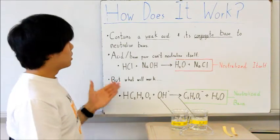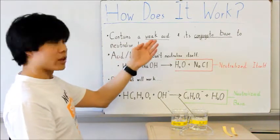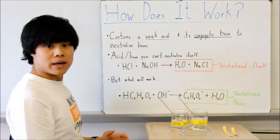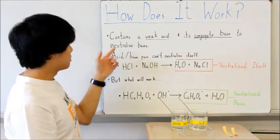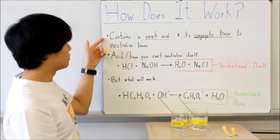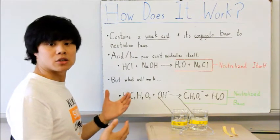So how does a buffer work? A buffer works by containing both a weak acid and its conjugate base in order to neutralize bases. If you are adding a base to the solution, you would want to make a buffer from a weak acid and its conjugate base.